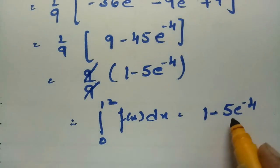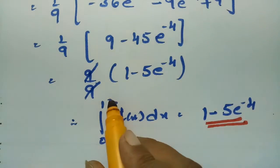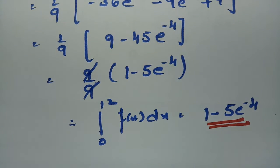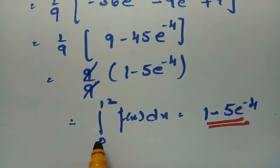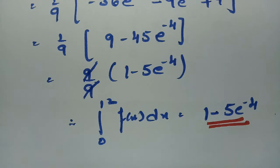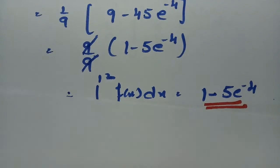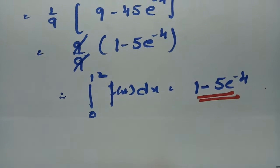So this is the probability value: P(0 ≤ X ≤ 12) = 1 − 5e^(-4). Therefore the probability that the power consumed is between 0 and 12 is 1 − 5e^(-4). If the daily consumption exceeds 12 million kilowatt hours then there will be a shortage, so next we find when the power supply is inadequate.